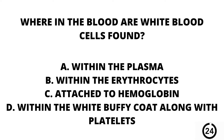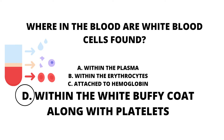Question number eight. Where in the blood are white blood cells found? A. Within the plasma. B. Within the erythrocytes. C. Attached to hemoglobin. Or D. Within the white buffy coat along with platelets. Our answer here is D. The white blood cells are found within the white buffy coat along with the platelets.